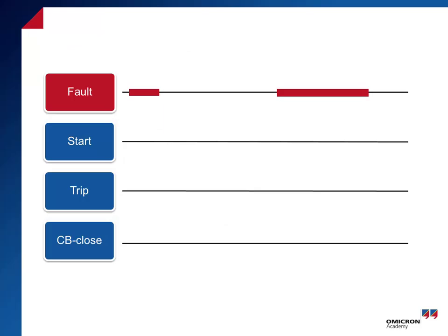In the graphic, you see the signals for the automatic reclosing. When a fault is detected on an open line, the relay trips and the line is disconnected. Once a dead or delay time has elapsed, the line is automatically reconnected. If the fault persists, the line is disconnected again.